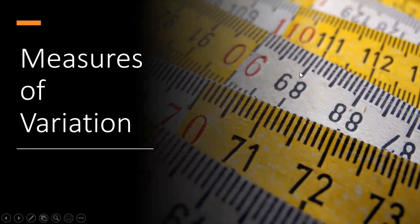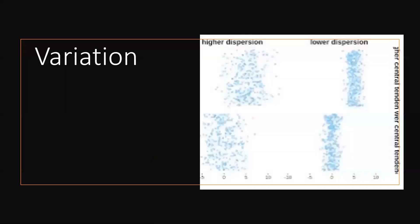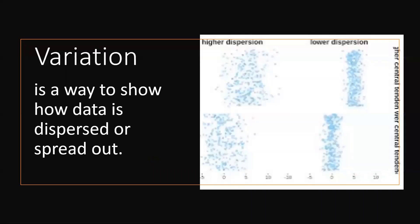Now let's talk about measures of variation. Variation is a way to show how data is dispersed or spread out. If the data is compressed like this, meaning it has a lower dispersion; if the data is scattered, meaning it has a higher dispersion.